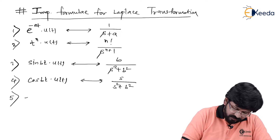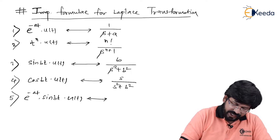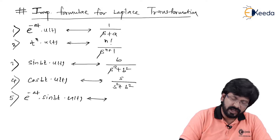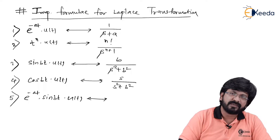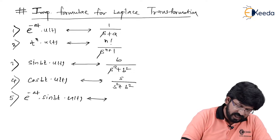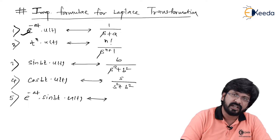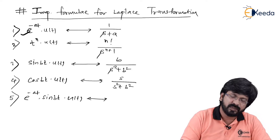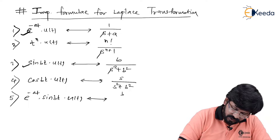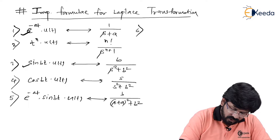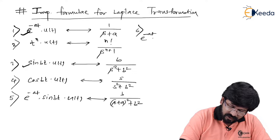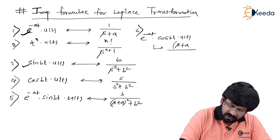The fifth property: for e^(−at)·sin(bt)·u(t) — the formula for sin(bt) is b/(s²+b²), but the moment e^(−at) appears, just replace s with s plus a, because e^(−at) has Laplace 1/(s+a). So wherever there is s in the sin(bt) formula, replace s with s+a. It becomes b upon (s+a)² plus b². Similarly, e^(−at)·cos(bt)·u(t) has Laplace transform (s+a) upon (s+a)² plus b².